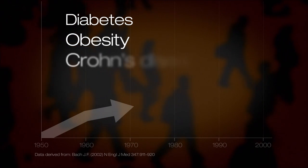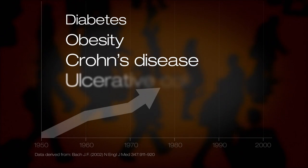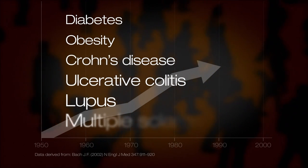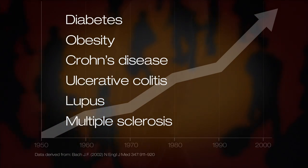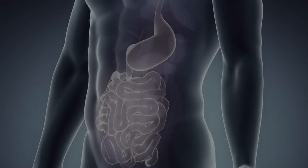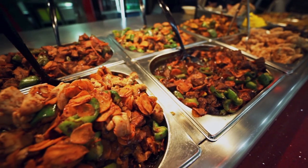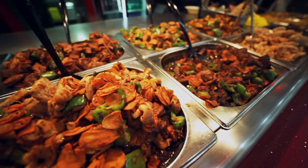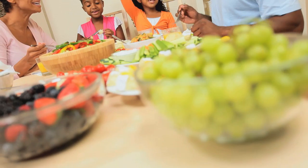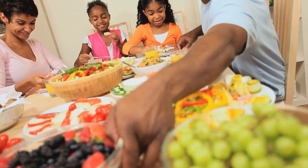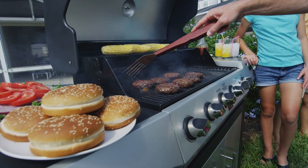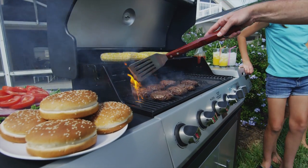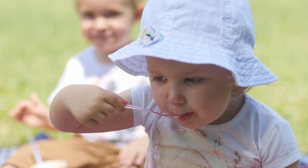A lot of the complex diseases that we have seen dramatic increases in over the last few decades are associated with abnormalities in composition of the microbiome. The cause-effect relationship still remains to be understood. We start asking the question: what's the role of diet? What is the role of host genetic factors? And how do all these factors converge to bring about health or disease states?